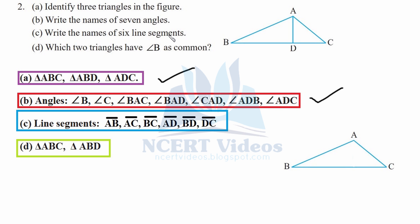Part C — write the names of six line segments. The six line segments are: AB, AC, DC, AD, BD, and DC. In total, that gives us six line segments.